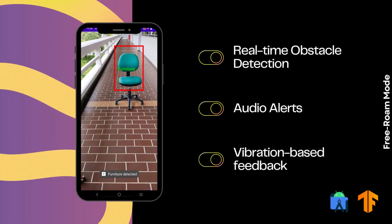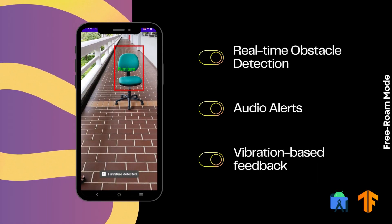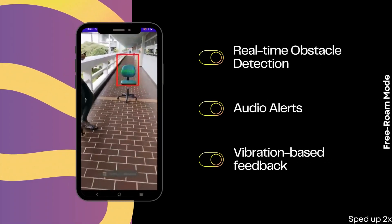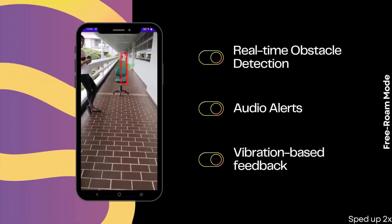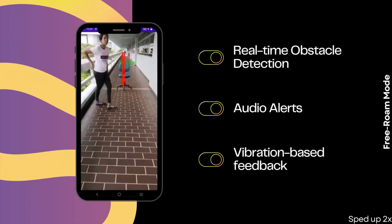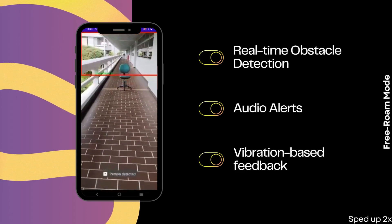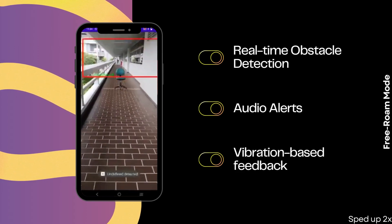VirtualEye's Free Roam mode alerts visually impaired users of the various obstacles in their path using real-time obstacle detection and audio feedback. In this demonstration, it can be seen that VirtualEye is able to accurately determine the obstacles in the user's path in real time.